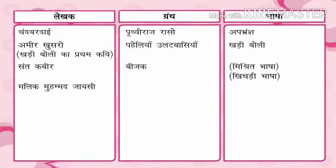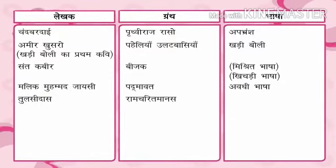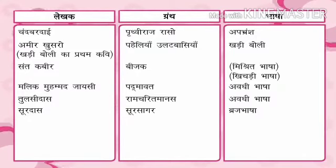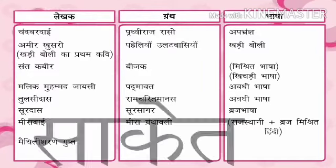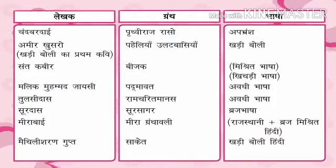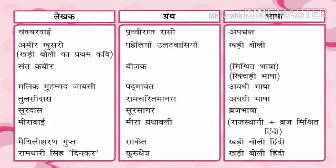4. Malik Muhammad Jayasi — Padmavat, bhasha: Avadhi. 5. Tulsi Das — Ramcharit Manas, bhasha: Avadhi. 6. Surdas — Sursagar, bhasha: Braj. 7. Mirabai — Mira Granthavali, bhasha: Rajasthani-Braj mishrit Hindi. 8. Maithili Sharan Gupta — Saaket, bhasha: Khari Boli Hindi. 9. Ramdhari Singh Dinkar — Kurukshetra, bhasha: Khari Boli Hindi.